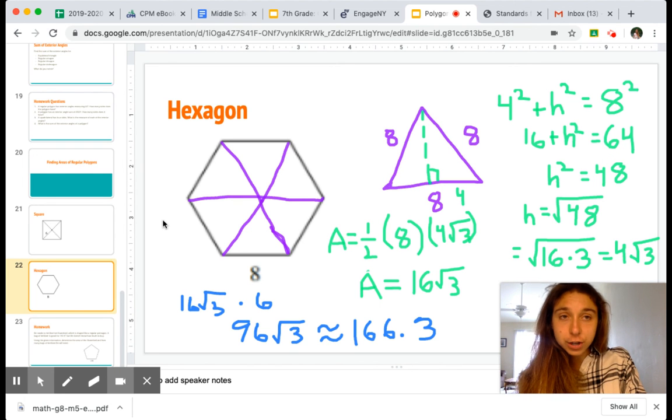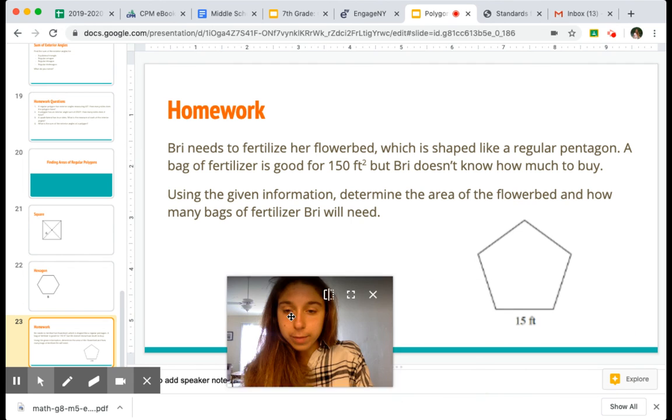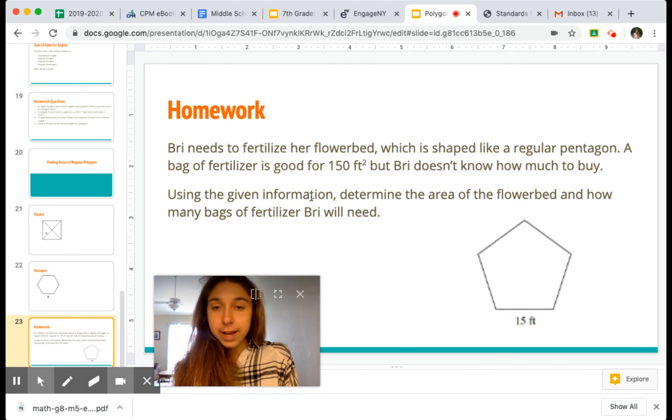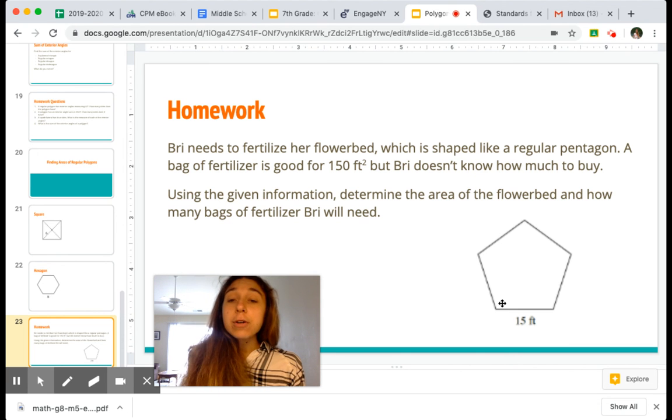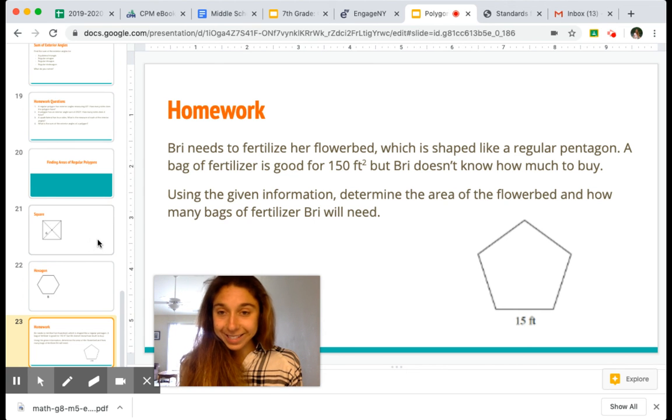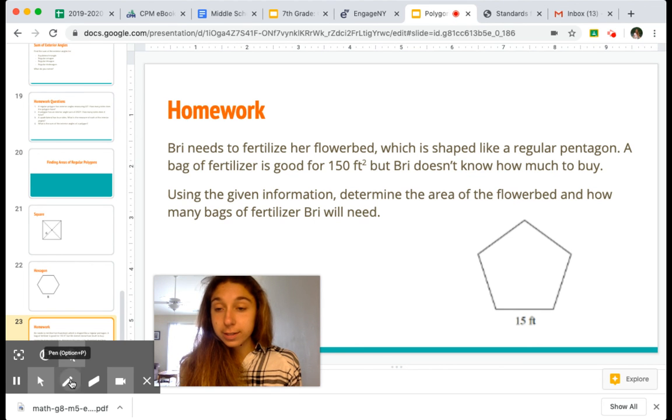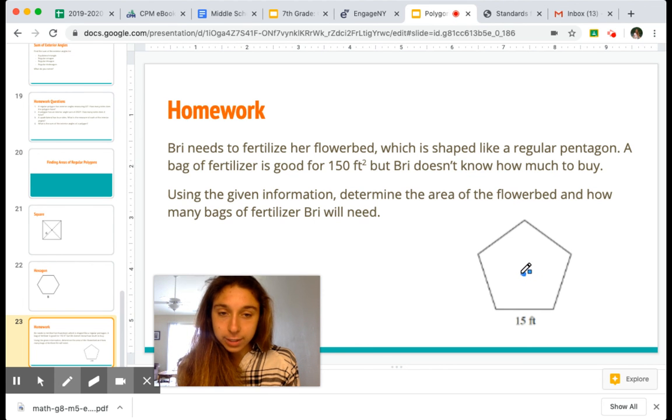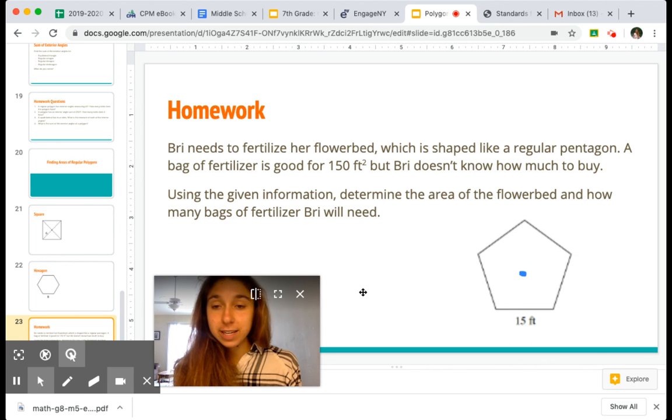You guys do have some homework to try. Bree is going to fertilize her flower bed, which is shaped like a regular pentagon. A bag of fertilizer is good for 150 square feet, but Bree doesn't know how much to buy. Using the given information, determine the area of the flowerbed and how many bags of fertilizer Bree will need. So you're going to want to approach this the same way we did the square and the hexagon, by dividing it into equal triangles. So start with a point in the center, as close to the center as you can, and divide your shape into equal triangles.